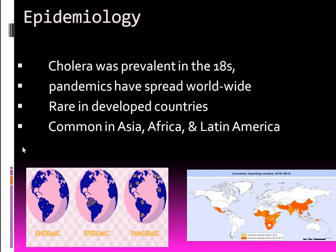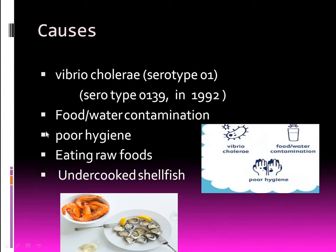Epidemiology: cholera is more prevalent and has been pandemic, spreading worldwide. It is rare in developed countries and is common in Asia, Africa, and Latin America.